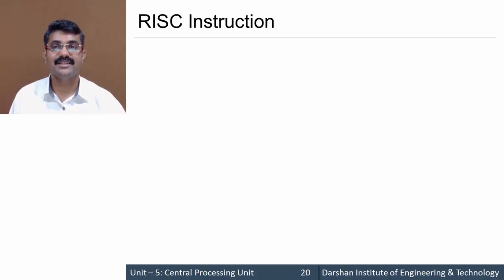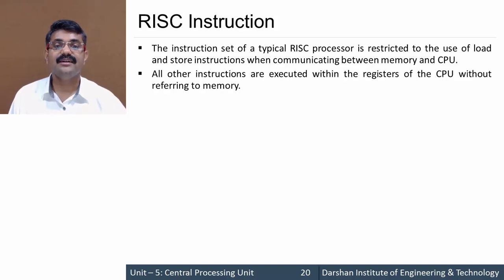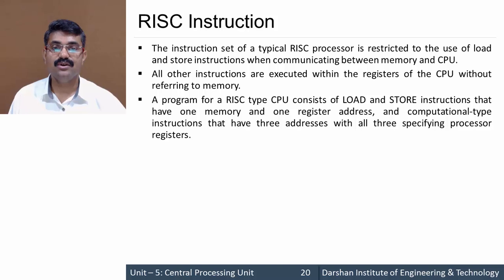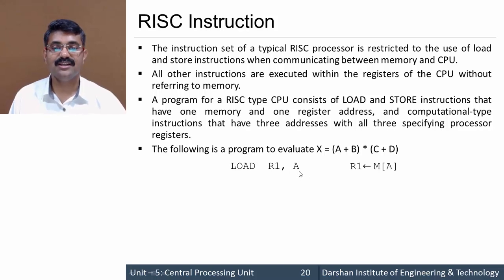The last type is RISC type instruction — a hybrid type instruction that is limited to load and store instructions when communicating between memory and CPU registers. Other instructions do not use memory for referencing. So for memory access we have only two instructions — LOAD and STORE — and all other instructions operate only on registers. For the expression x = (a + b) × (c + d): LOAD R1, a transfers a to R1; LOAD R2, b transfers b to R2.